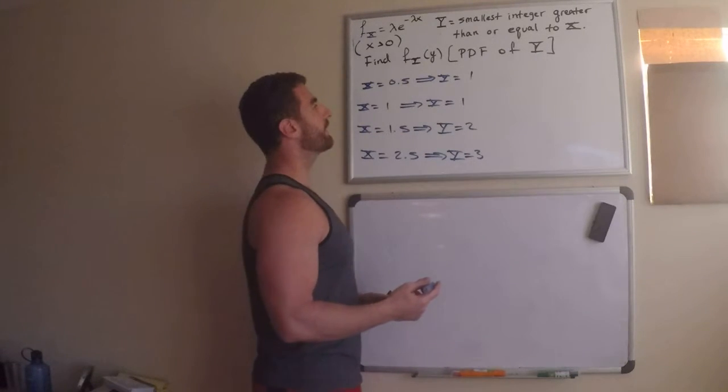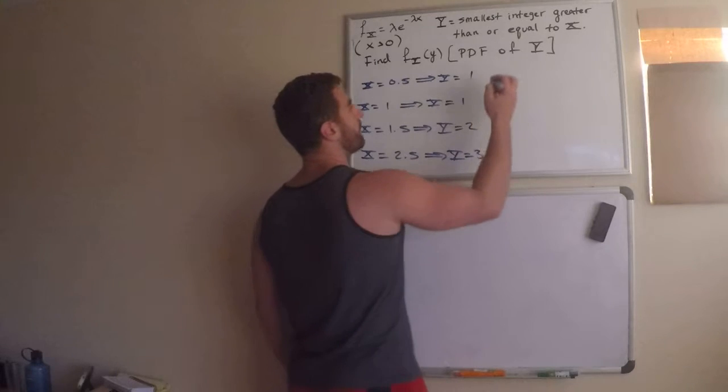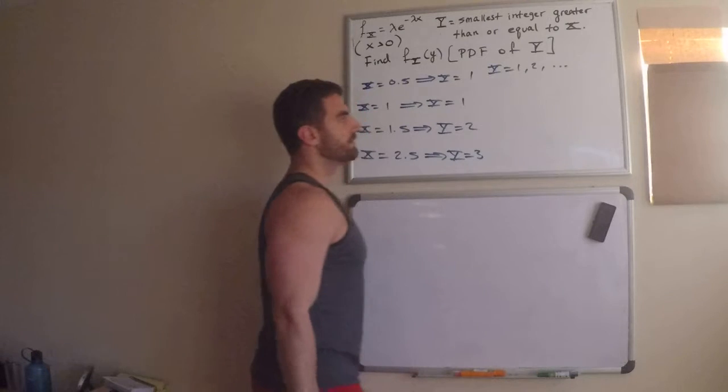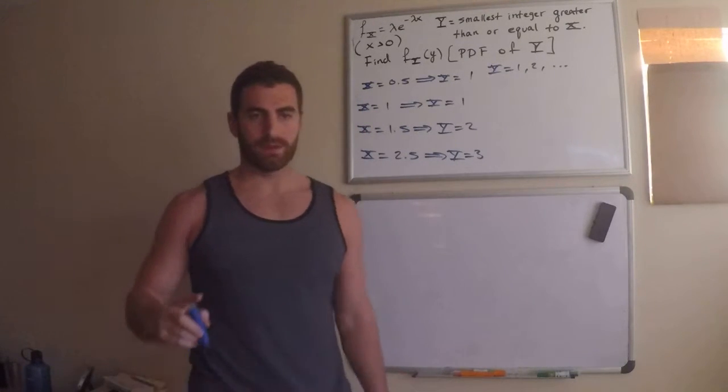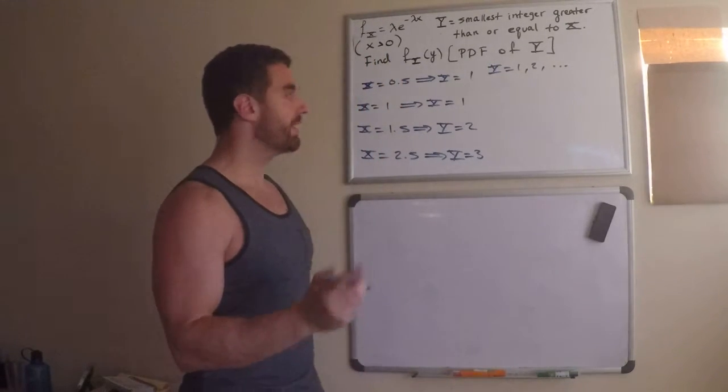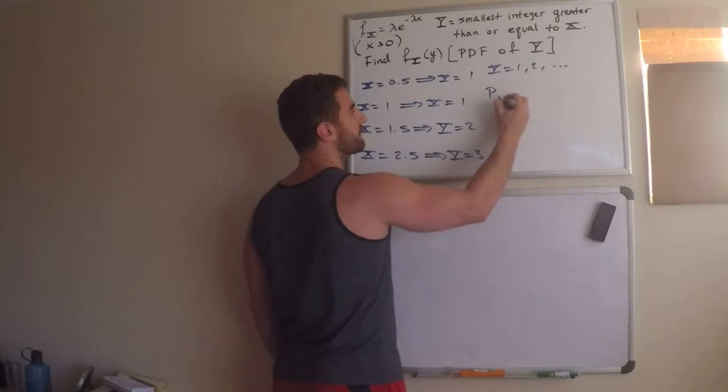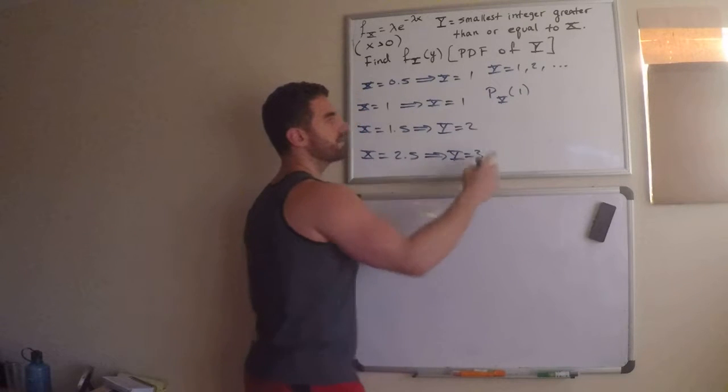And it has to be integers greater than or equal to 1. The kinds of things we can get from y are, we can get y is equal to 1, 2, etc. Now, how about the probability that y is 1? So, looking at this, what's the probability of 1?